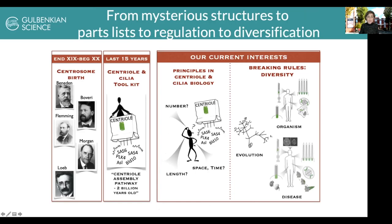These structures were actually discovered long ago by famous biologists, who were already asking questions we still ask today — what is the role of these structures in human disease, in cells, and how are they inherited? It was only in the last 15 years that we had the tools to address these questions, through genomics, comparative genomics, microscopy, sensitive proteomics, and RNAi screens. This gave us a list of molecules needed to form centrioles and cilia — a toolkit present across eukaryotes, suggesting a last common ancestor already had these structures, meaning this pathway is about 2 billion years old.